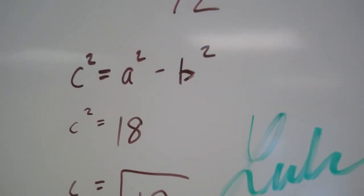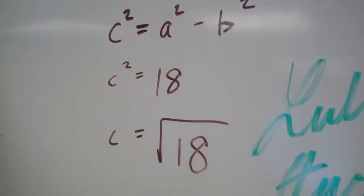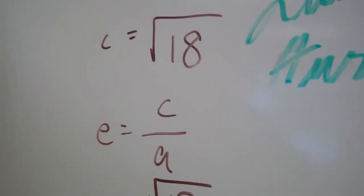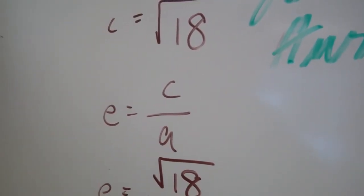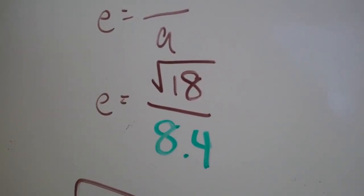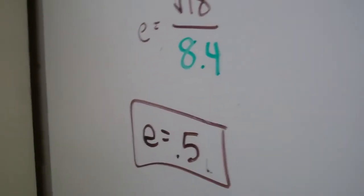The formula is C squared equals A squared minus B squared. That's how you found C then? Yep. So where did you get the E equals C over A? That was in the book, and then I just plugged in the square root of 18 over the square root of 72. Well, that seems pretty simple. Fairly clearly laid out for us. Thank you for your work here today, Luke.